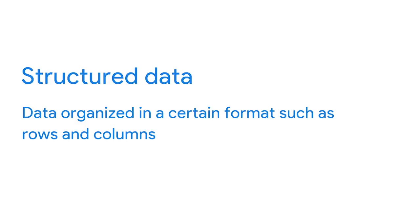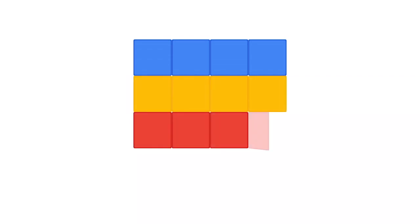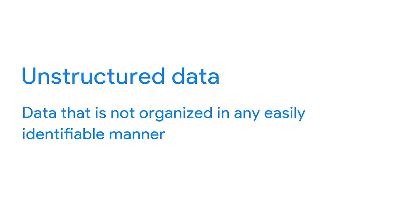A great thing about this data is that it's structured. Structured data is data that's organized in a certain format, such as rows and columns. Spreadsheets and relational databases are two examples of software that can store data in a structured way. Having a framework for the data makes it easily searchable and more analysis-ready. As a data analyst, you'll work with a lot of structured data, which will usually be in the form of a table, spreadsheet, or relational database. But sometimes you'll come across unstructured data — this is data that is not organized in any easily identifiable manner. Audio and video files are examples of unstructured data because there's no clear way to identify or organize their content.